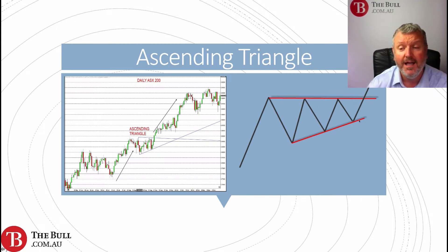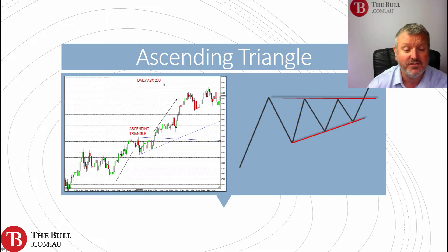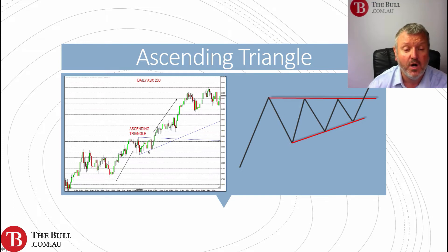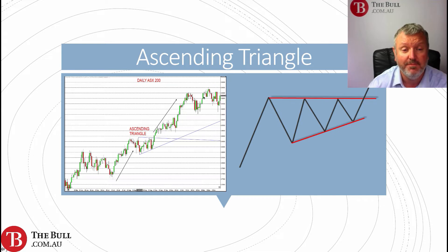The prior trend was higher and the likely breakout is to the upside. Here we have a chart of the daily ASX 200. The market was principally in an uptrend, then we go into this ascending triangle with higher lows and peaks at around the same levels, and then the market eventually breaking higher to continue the uptrend — a continuation pattern.